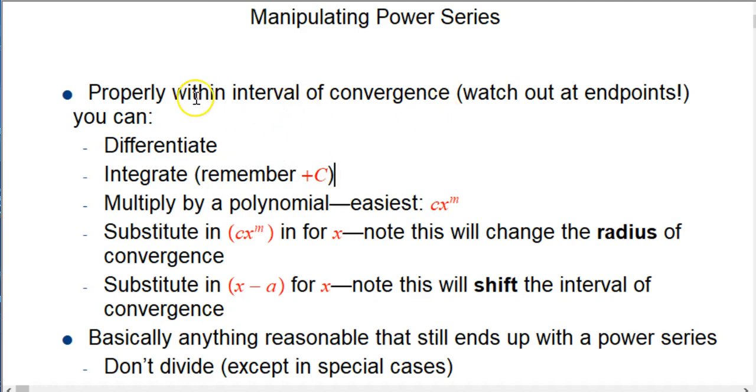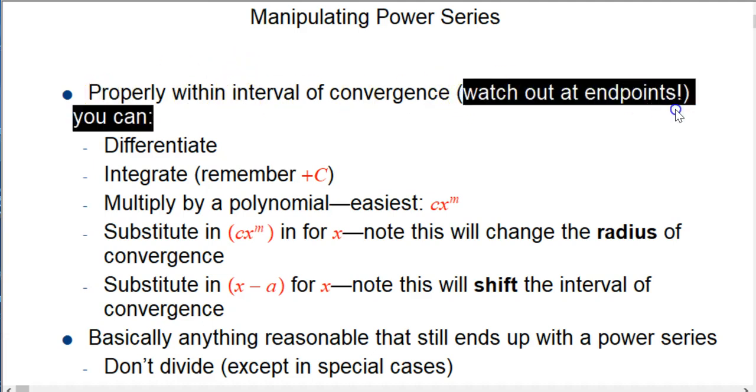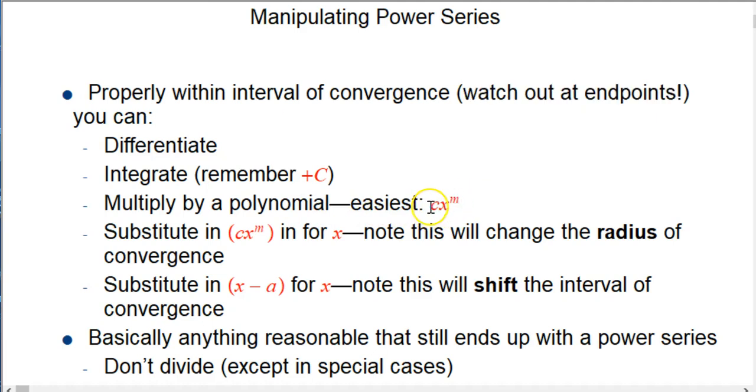When you're doing these operations, you want to make sure you are within the interval of convergence, and especially for differentiation, it might actually turn something that's convergent at an endpoint to something that's not convergent, so watch out. But if you're properly within, not at the endpoints, all these things are going to be legal. You can multiply by a polynomial, most often something simple like 7x squared or a monomial. You can substitute a monomial in for x. You can substitute a polynomial in too, but it's going to be much messier. So you can put in x squared for x. That's very common. That will usually change the radius of convergence, so you have to be careful. And you could always take a power series in x, and everywhere you see an x, put an x minus a for x. That's going to shift the function and shift the interval of convergence.